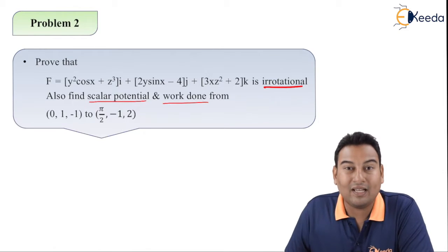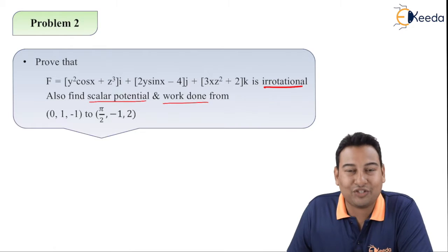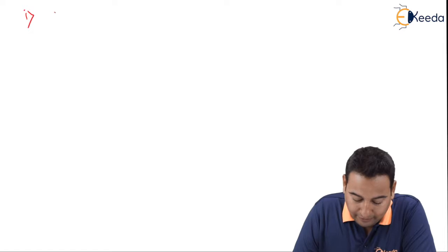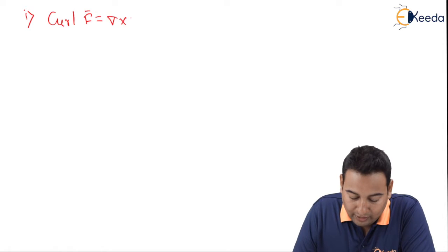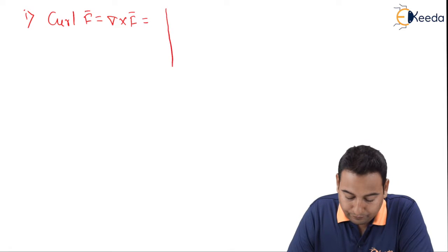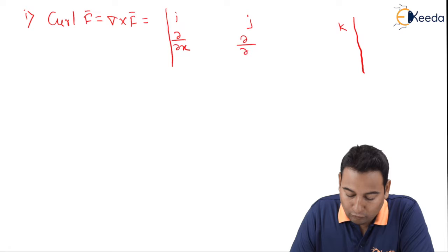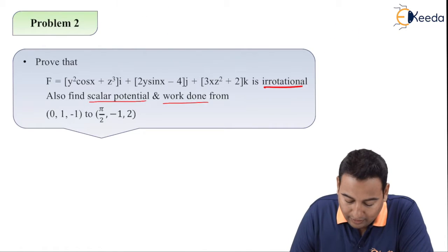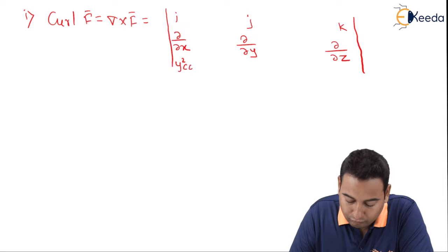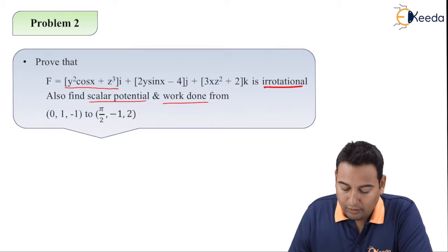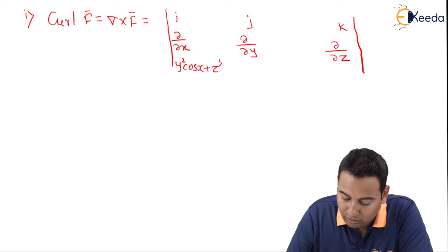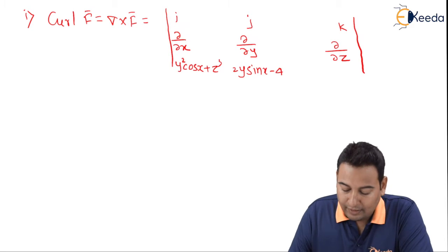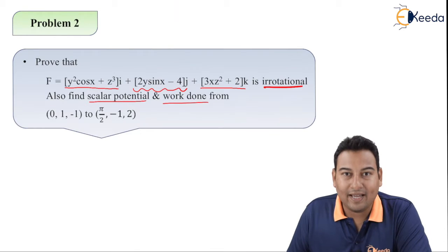First, we prove whether the vector is irrotational or not. We need to prove curl of F bar equals zero. Curl of F bar equals del cross F bar, which is the determinant with i, j, k in the first row; ∂/∂x, ∂/∂y, ∂/∂z in the second row; and y² cos x + z³, 2y sin x − 4, and 3xz² + 2 in the third row.